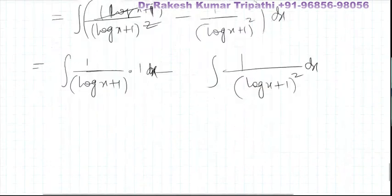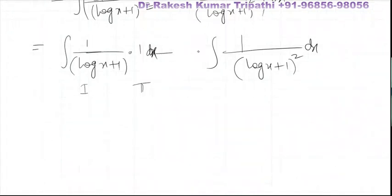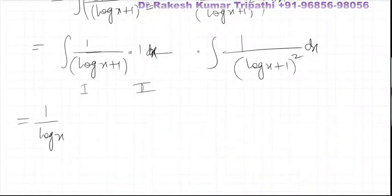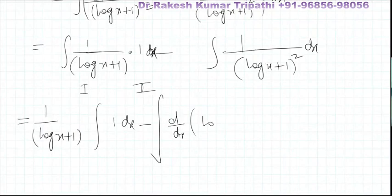In the first integral we need to apply the product rule, known as integration by parts. We consider one upon (log(x) + 1) as the first part. So one upon (log(x) + 1) can be written as (log(x) + 1) to the power minus one. We take the constant integral of the second part, minus the differential of the first.